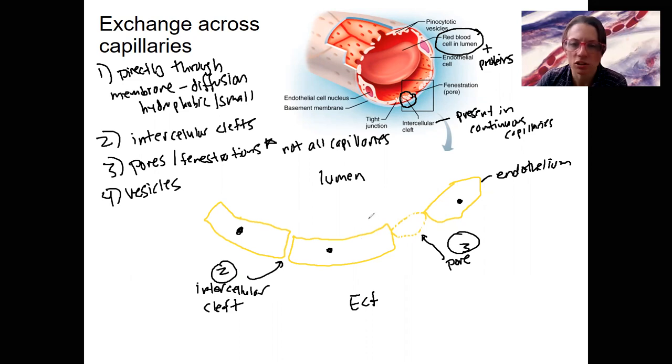So this is number two in terms of what we just talked about. This is number three. Where's number one? That's just going to be right through the membrane. Only certain things can do that. And then lastly, number four, we've got vesicles that can either go out of the cell or into the cell, endo and exocytosis.